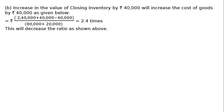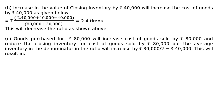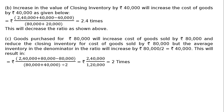Part C: goods purchased for rupees 80,000. This increases cost of goods sold by 80,000 but closing stock also increases by 80,000, so the numerator nets to zero change. However, average inventory in the denominator increases by rupees 40,000 (i.e., 80,000 divided by 2). The result is 2,40,000 divided by 1,20,000 equals 2 times, hence the inventory turnover ratio decreases in Part C.